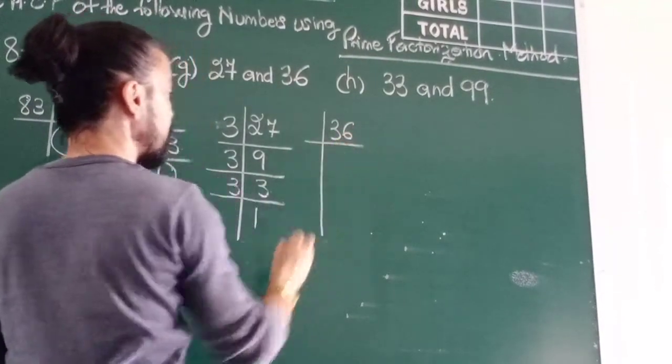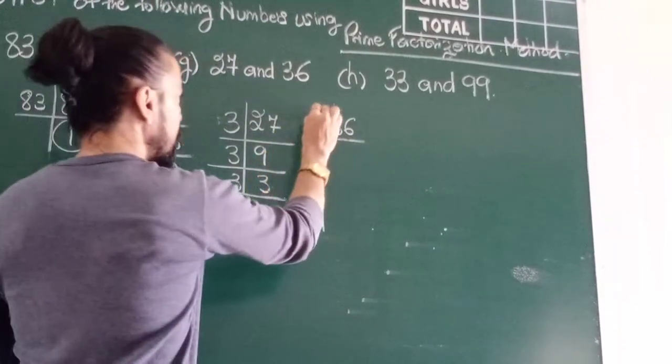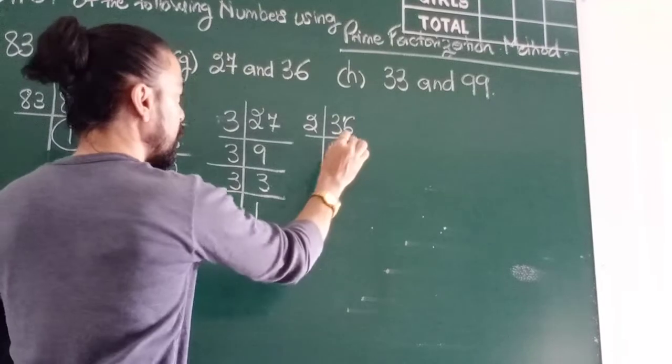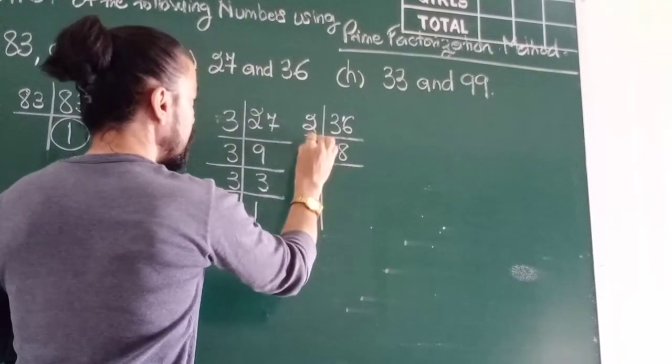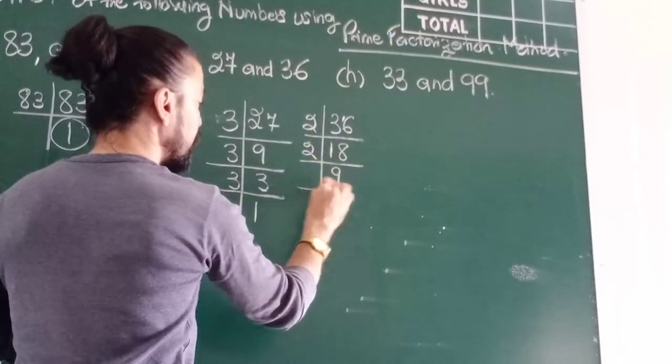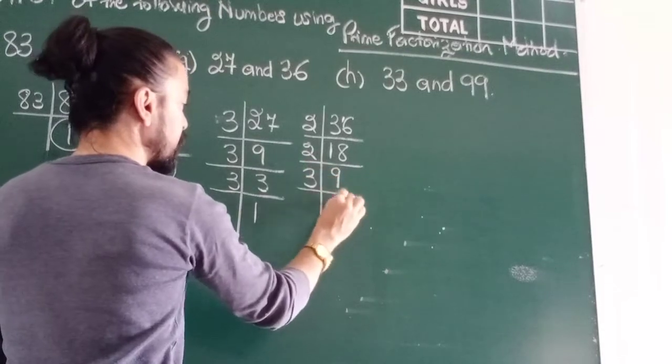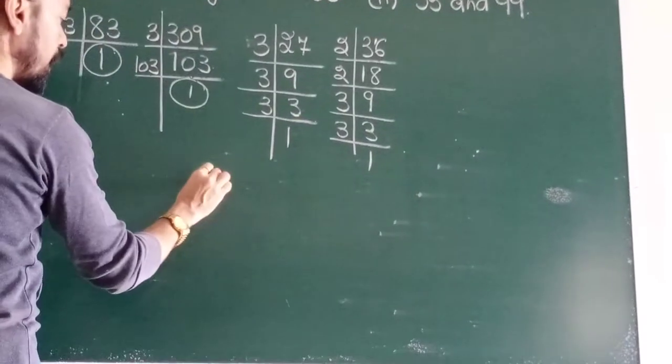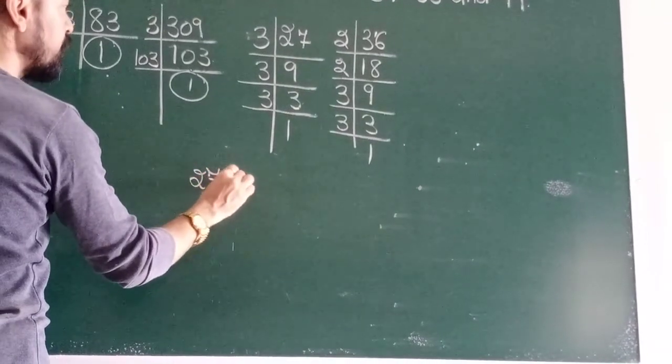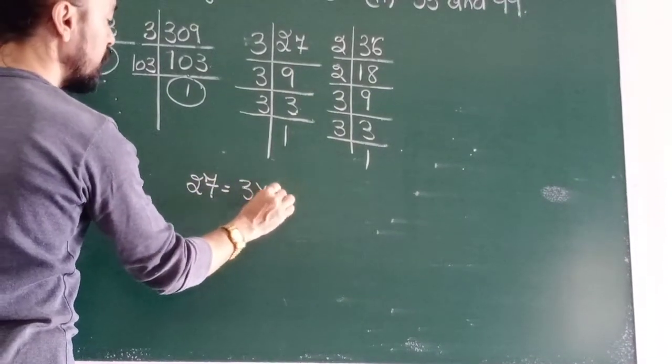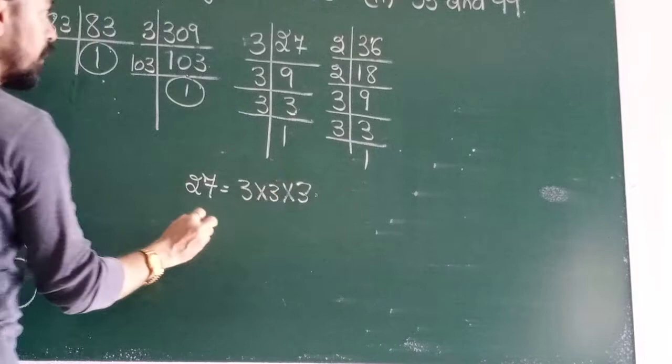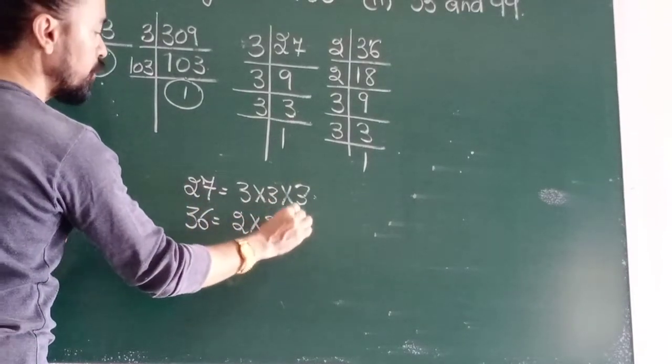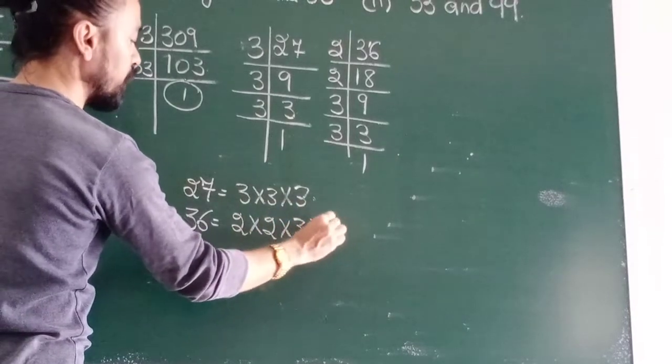Let's take 36 and factorize it. Does 2 divide it? Yes, because it's ending at 6. 2 ones are 2. Take down 1 to the side. Small 1, 2 sixes are 16. 2 nines are 18. 9 is divided by 3. 3 threes are 9. And 3 ones are 3.